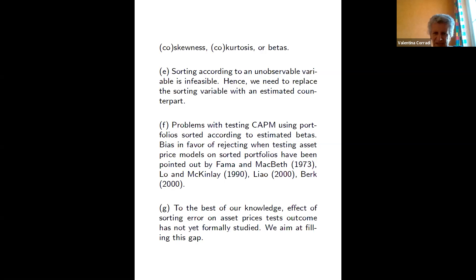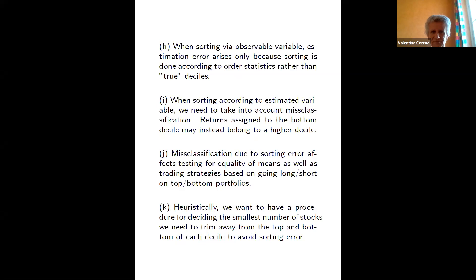In their paper, they compare international rankings — say, pupil ability across OECD countries — and find that taking estimation error into account makes confidence sets larger. In our case, the situation is different: we don't care about the exact ranking, but we don't want to allocate stocks to the wrong quantiles. Even when sorting according to an observable variable, there is still error because we are sorting according to order statistics rather than the true quantiles.